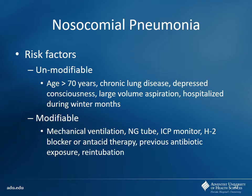Risk factors for nosocomial pneumonia include unmodifiable factors like advanced age, chronic lung disease, depressed consciousness, large-volume aspiration, and hospitalization in winter months. Modifiable factors include getting patients off the ventilator as soon as possible, removing NG tubes, and removing ICP monitors. Also of note, H2 blockers and PPIs raise gastric pH - normally the stomach is pH 2 - which makes it more hospitable for bacterial growth and increases aspiration risk.